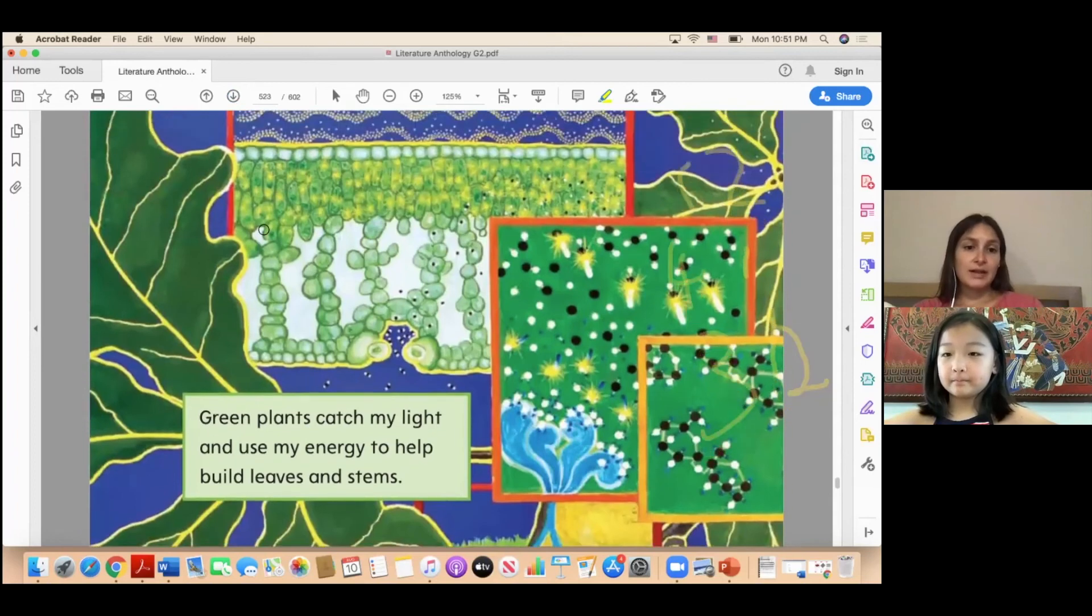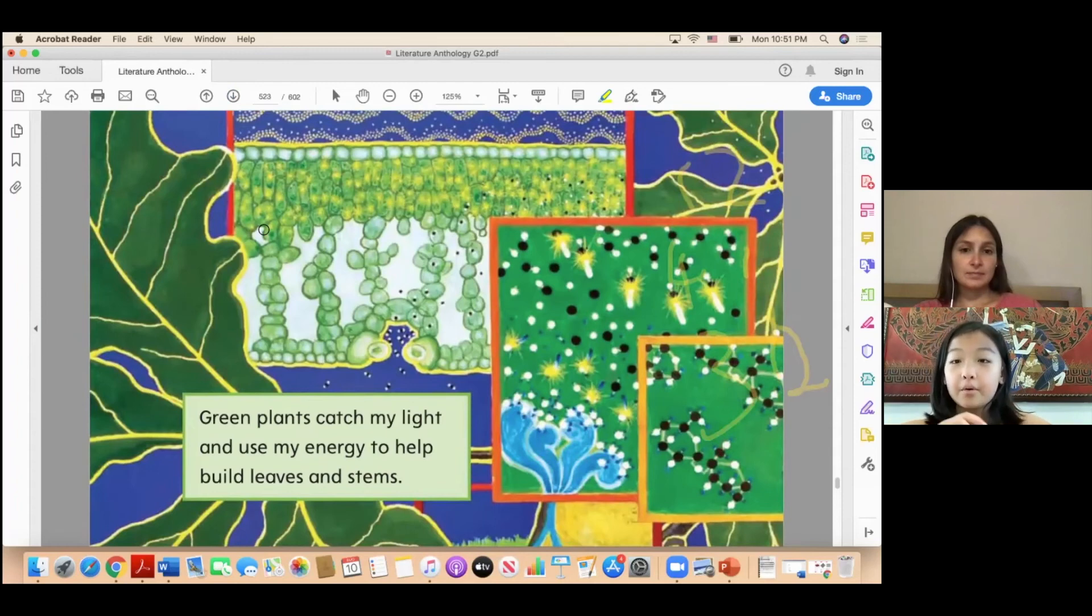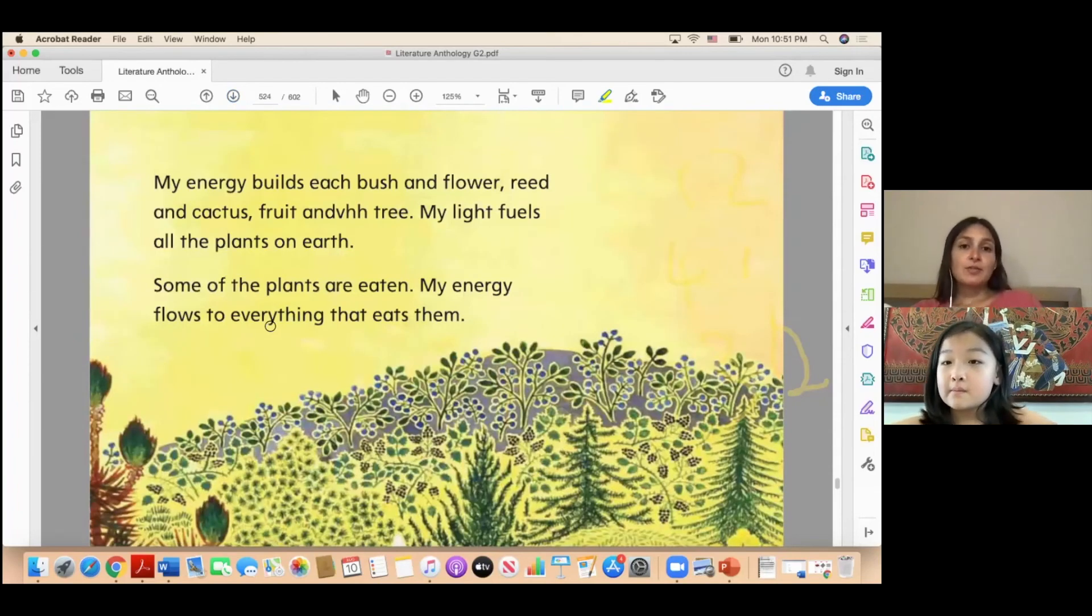So: Green plants catch my light and use my energy to help build leaves and stems. My energy builds each bush and flower, reed and cactus, fruit and tree. My light fuels all the plants on earth. Some of the plants are eaten. My energy flows to everything that eats.